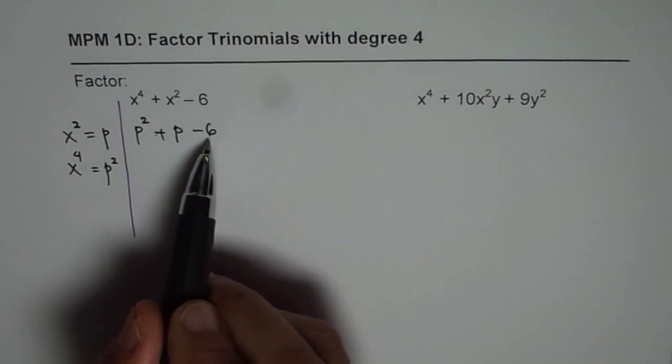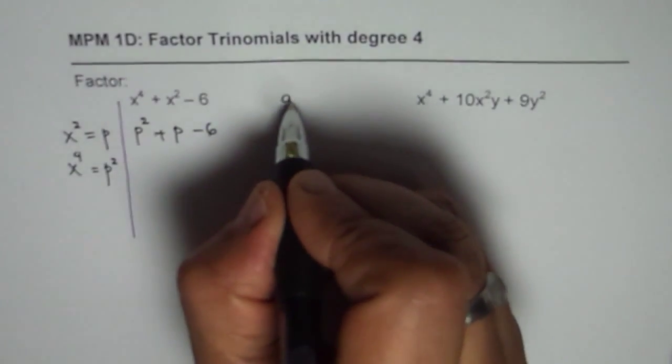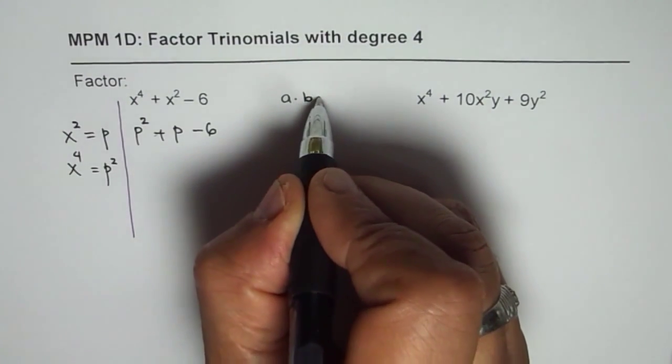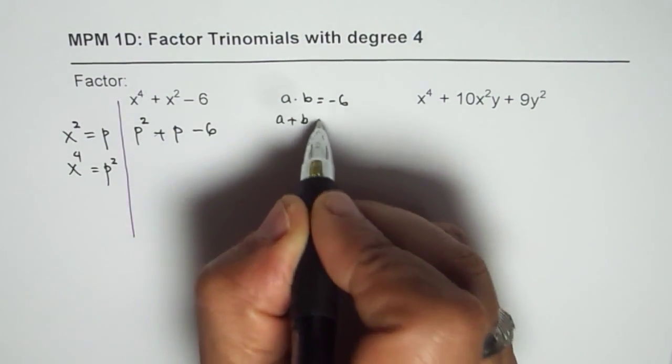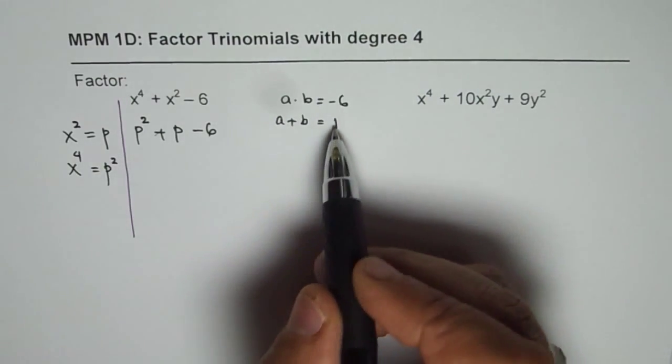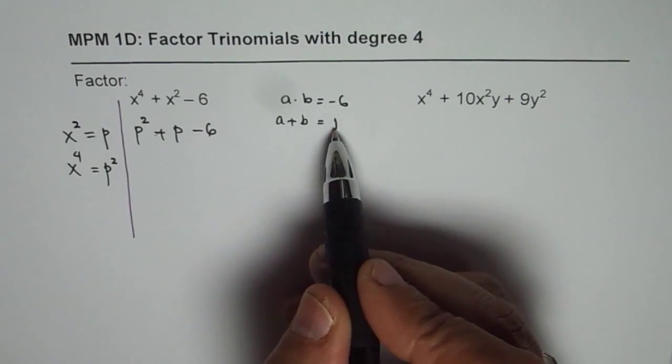We are looking for two numbers whose product is -6. So let's say a and b are two numbers whose product equals -6 and whose sum is 1. So -6 means one positive, one negative, with the higher one positive for a positive sum.